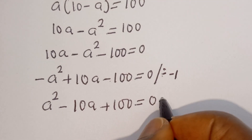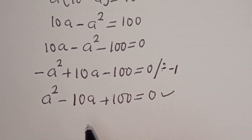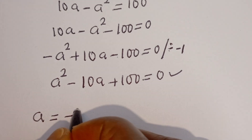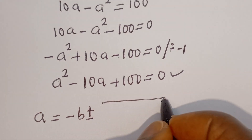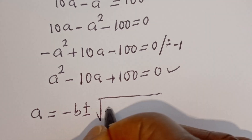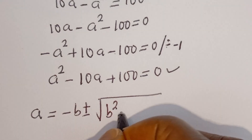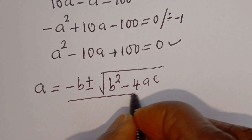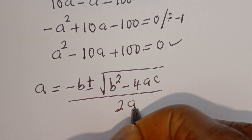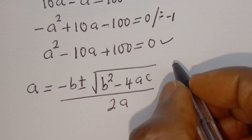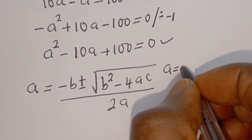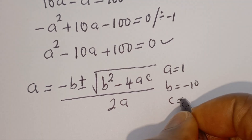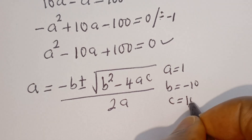And of course this is a quadratic equation. Let's solve this using the quadratic general formula: a is equal to minus b plus or minus square root of b squared minus 4ac, divided by 2a. From this equation, a is equal to 1, b is equal to minus 10, and c is equal to 100.